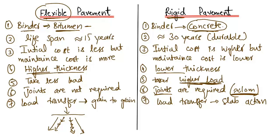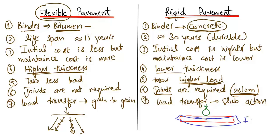In rigid pavement, the load transfer mechanism is called slab action. If we consider the rigid pavement as a slab with a wheel load acting on it, the pavement slab bends under the load. This bending action, showing some deformation delta, is how the load is transferred and distributed in rigid pavement. This bending of the slab under loading is what we call slab action.